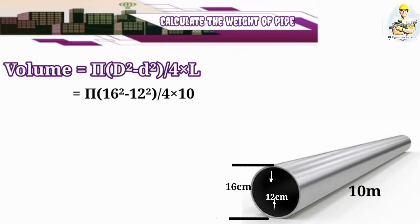We know that the external diameter is 16 centimeters, the internal diameter is 12 centimeters. So π(16²-12²)/4, and we know the length of the pipe is 10 meters. If we multiply it by 10, you can get the answer 0.08792 cubic meters.